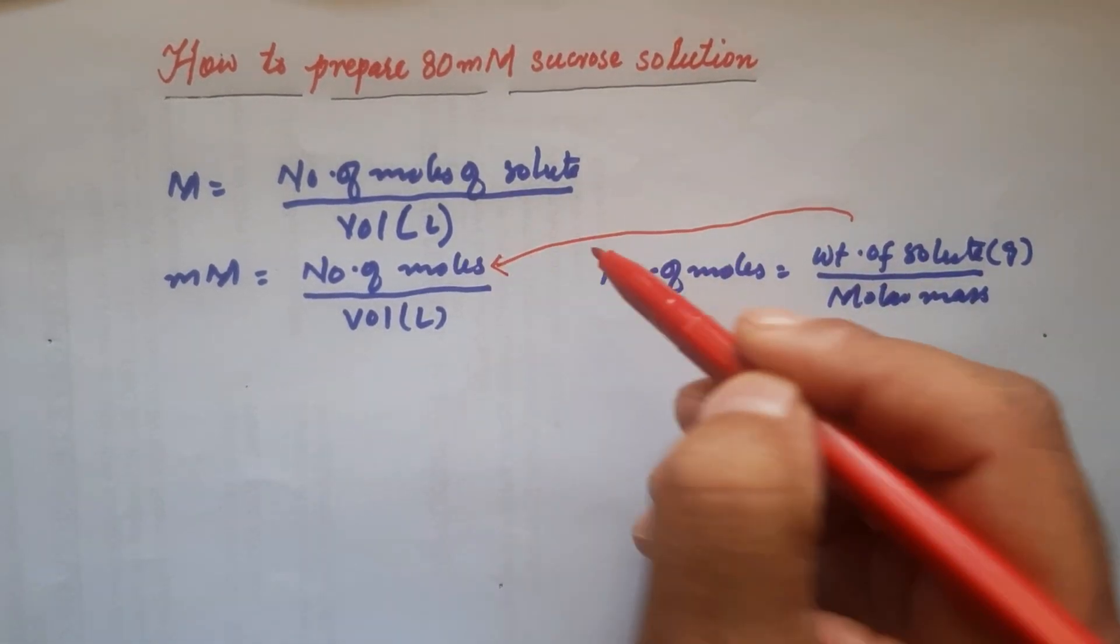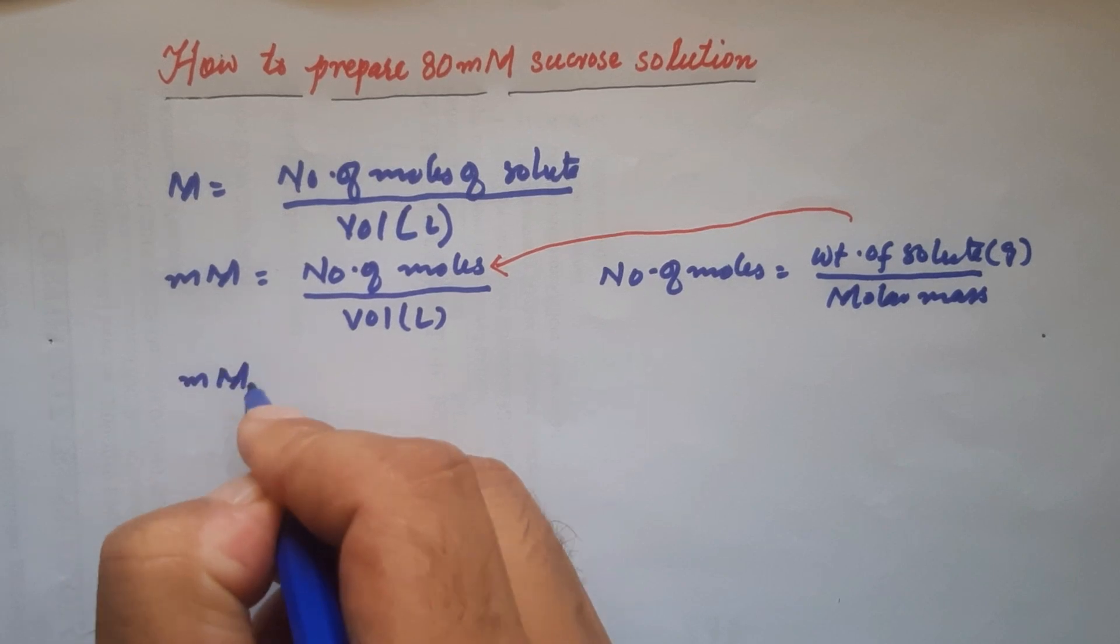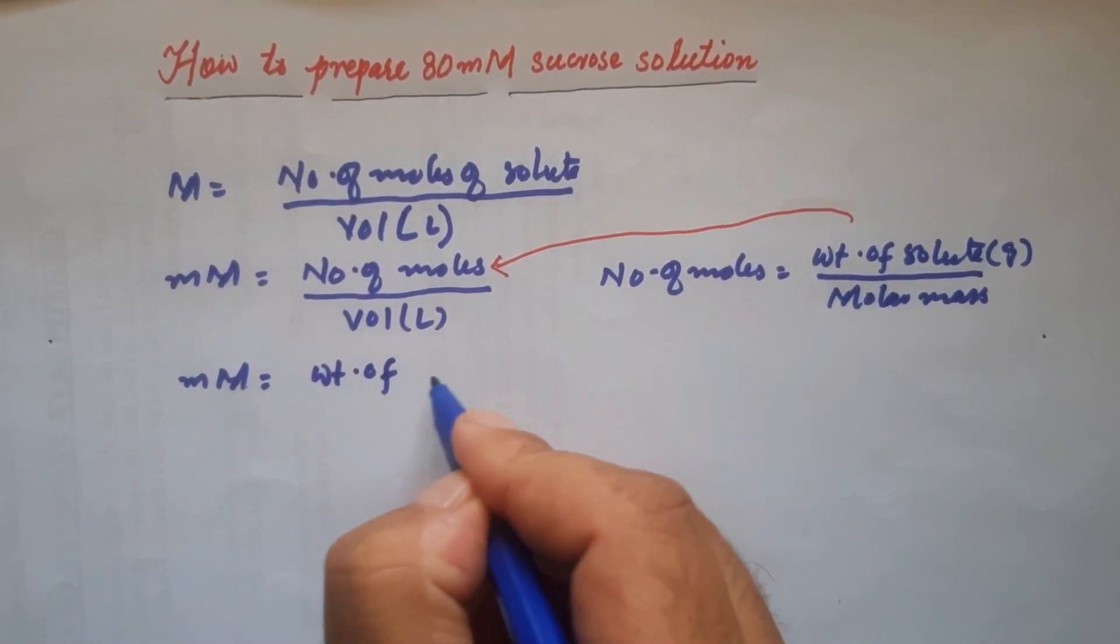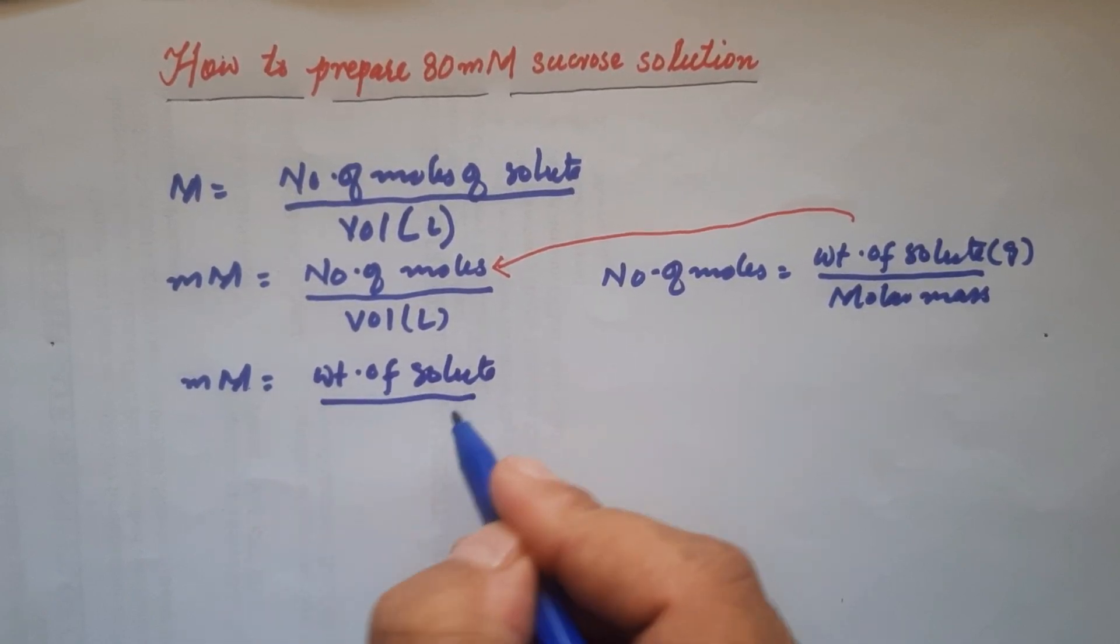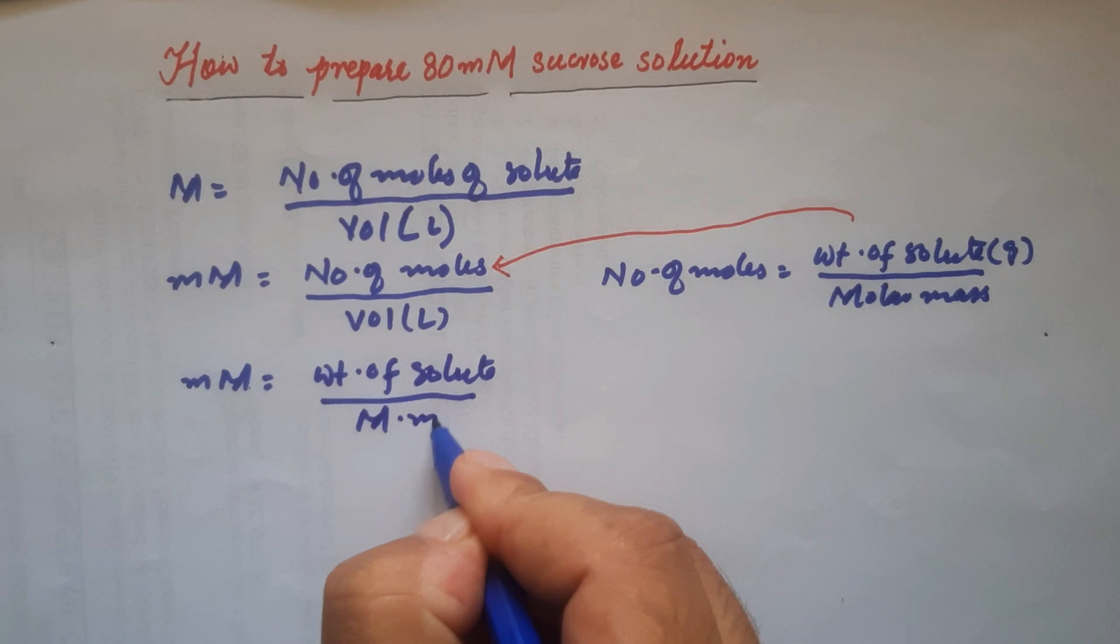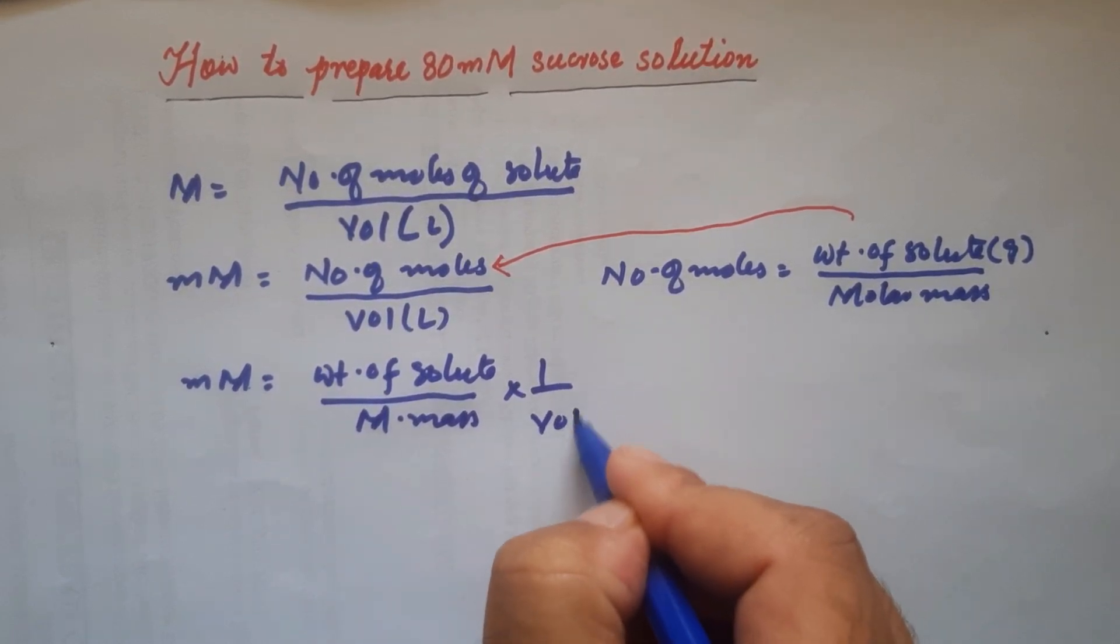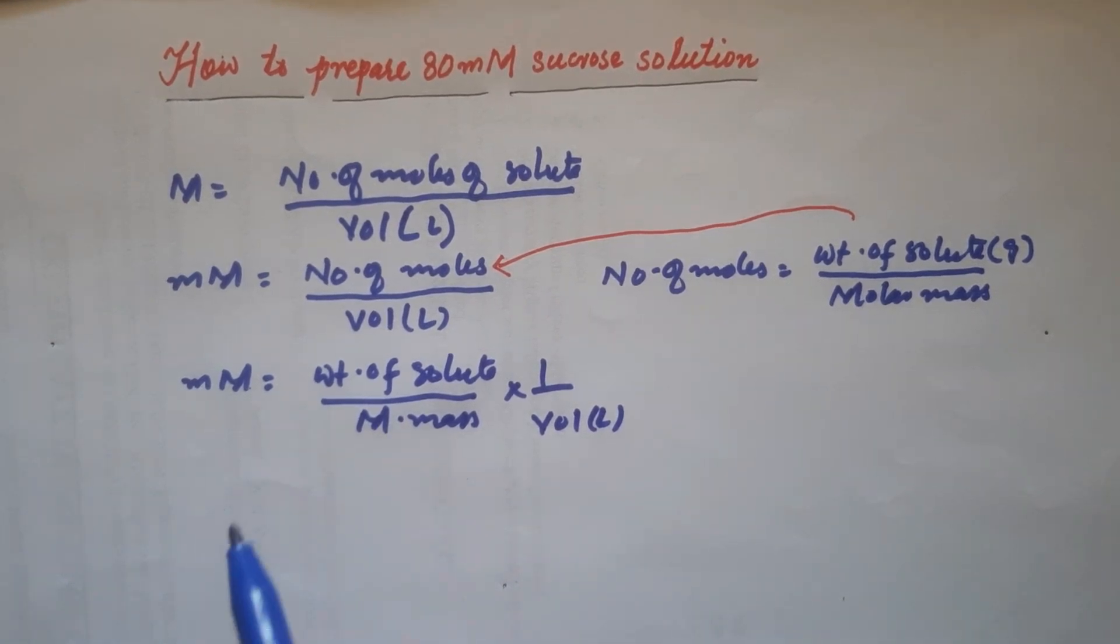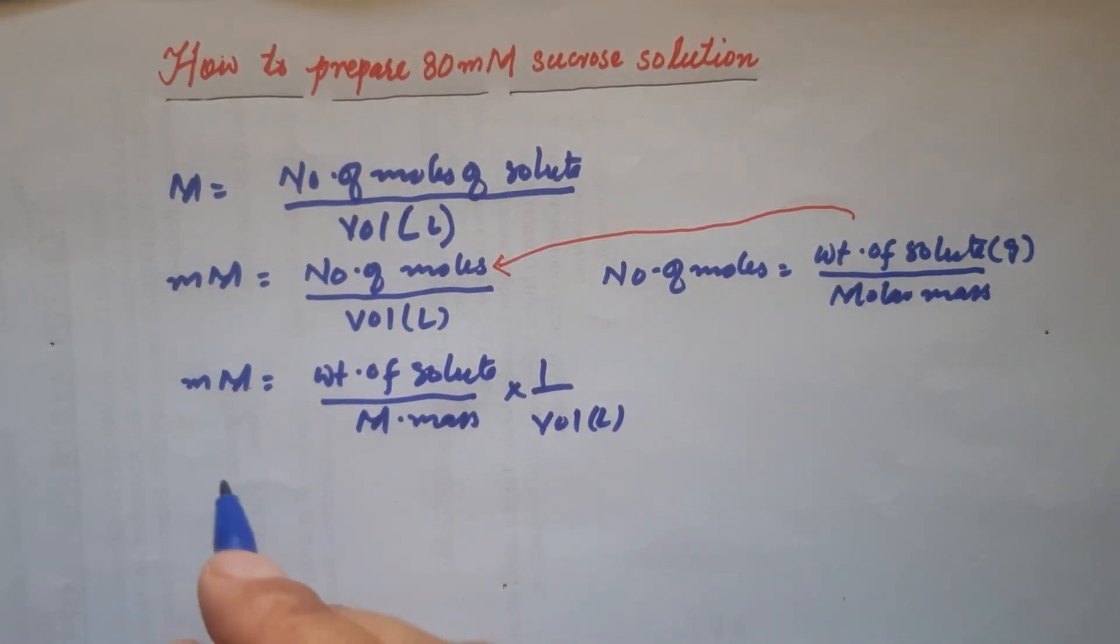Now we can put this into this relation. The new version of this relation would be: millimolar equals weight of solute over molar mass times volume in liter. Let's put in what we have been given: 80 millimolar sucrose solution.